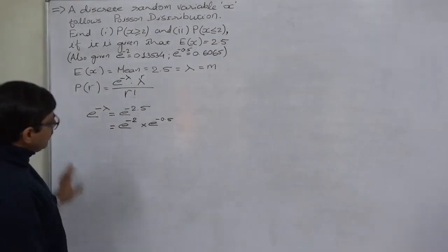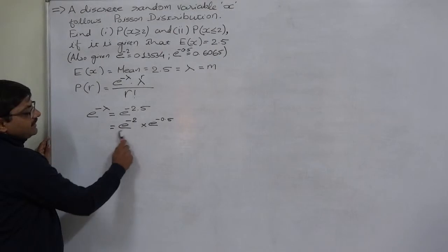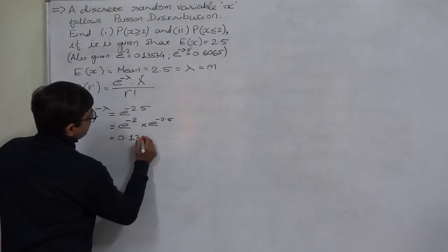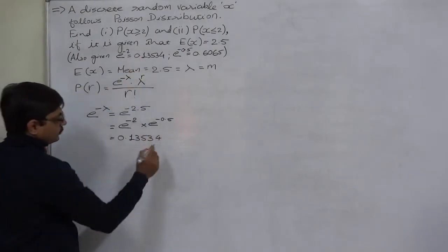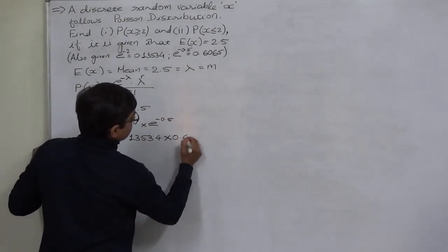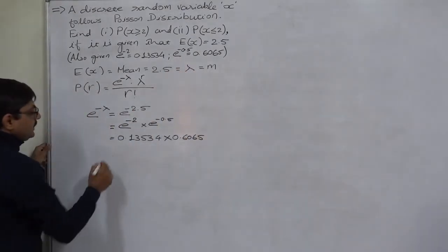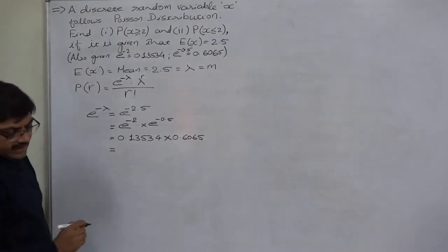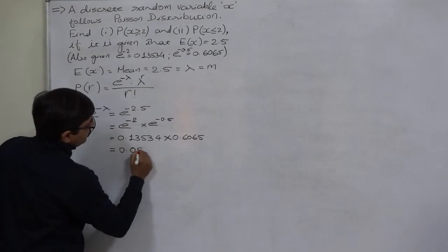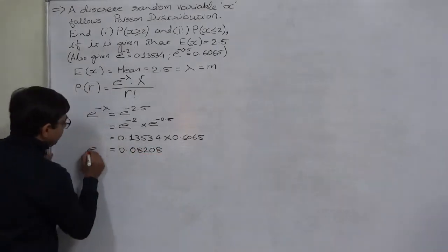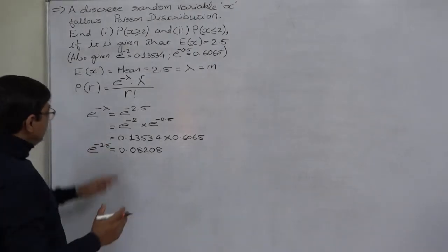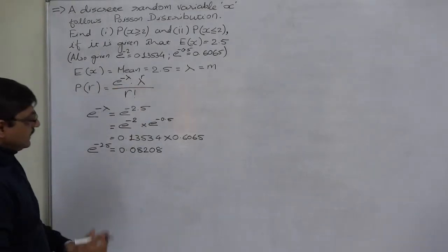Be careful: to get addition of powers we must multiply the bases. So the process is: 0.13534 × 0.6065 = 0.08208. That is the value of e^(−2.5), or broadly e^(−mean), in this particular case.